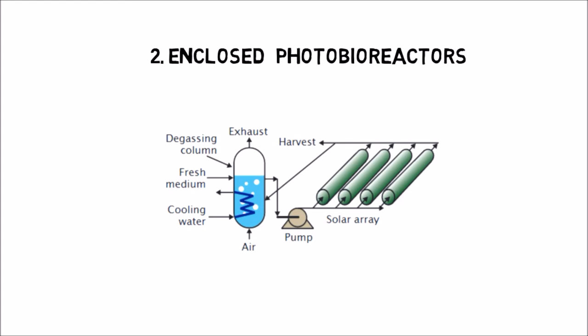There are also helical tubular photobioreactors whose tubes are spirally coiled. But it increase production cost as it require artificial illumination.